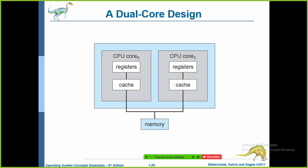Other designs may use a shared cache or a combination of local and shared cache — for example, a DMA controller having a cache memory shared among different I/O devices. These multi-core CPUs appear to the operating system as N standard processes, which puts pressure on operating system designers and application programmers to make use of those CPUs.